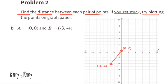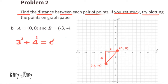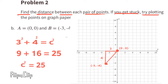Since the points for B have both a horizontal change and a vertical change, we'll treat this line as if it were the hypotenuse of a right triangle and use the Pythagorean theorem. The horizontal change is 3 and the vertical change is 4, so we use 3 squared plus 4 squared to find the hypotenuse squared. 3 squared is 9, 4 squared is 16, and 9 plus 16 is 25, so c squared equals 25. The square root of 25 is 5, so the distance between these two points is 5 units.